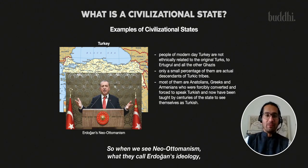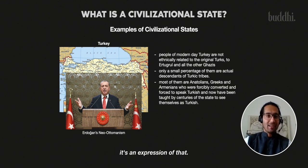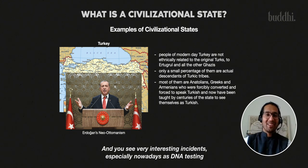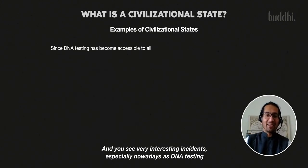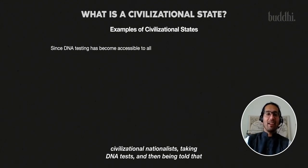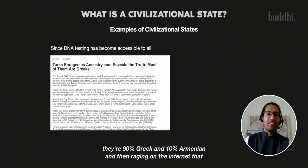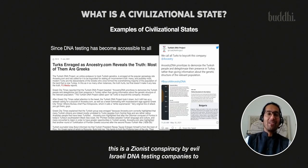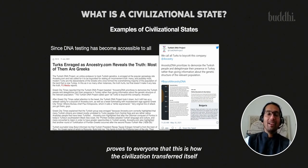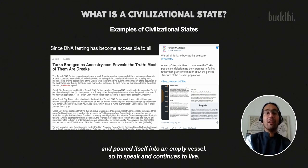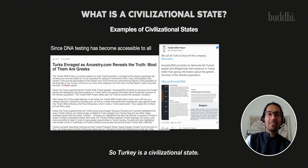As a result, they are the successors to the Turkic civilization and act in that way. So when we see neo-Ottomanism — what they call Erdogan's ideology — it's an expression of that. You see very interesting incidents, especially now that DNA testing has become accessible to all, of very proud Turkish nationalist civilizational nationalists taking DNA tests and being told they're 90% Greek and 10% Armenian, then raging on the internet that it's a Zionist conspiracy by Israeli DNA testing companies to destroy the Turkish bloodline. It only proves that this is how the civilization transferred itself, poured itself into an empty vessel, and continues to live. So Turkey is a civilizational state.